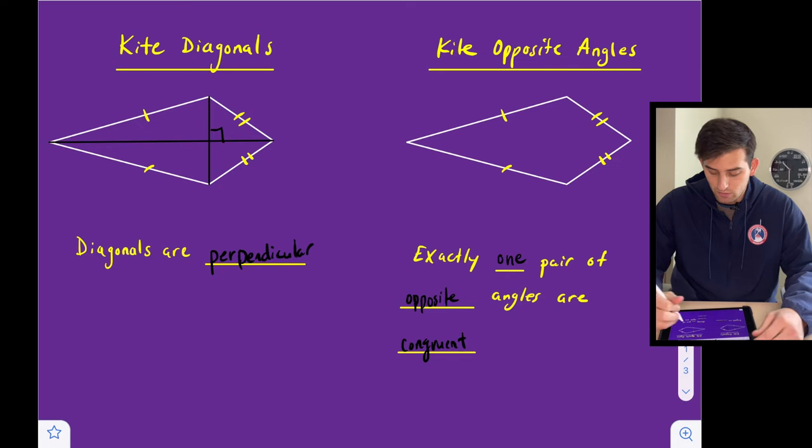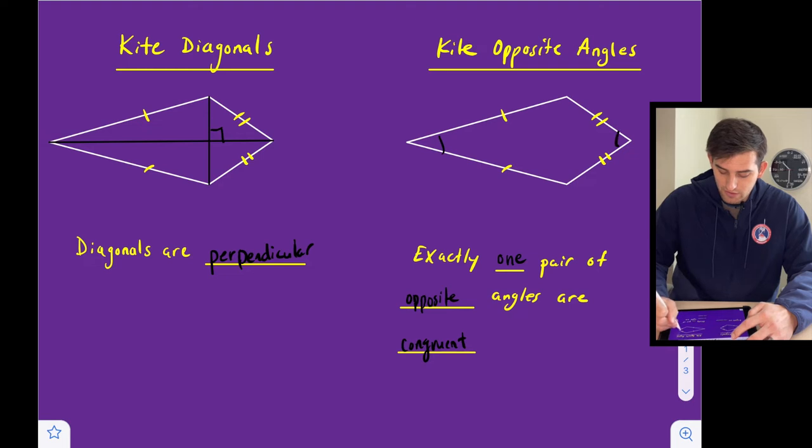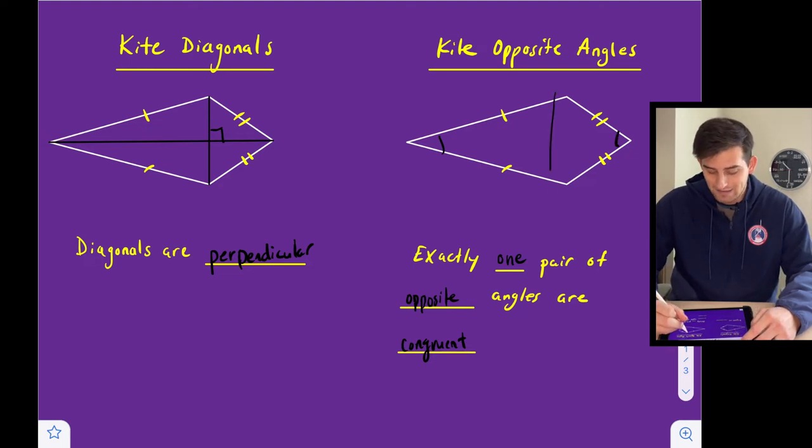So for example, we could say that this angle and this angle are congruent. And if those two angles are congruent, then the other two angles cannot be congruent. That could work the other way. We could say that these two angles are congruent, but if that's the case, then these two angles are not congruent. It just kind of depends on what the diagram looks like, what information has been given to us.